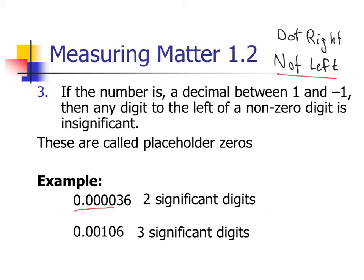In the next example, those zeros are to the left of the one — so they don't count. But what about the zero in the middle, between the one and the six? Yes, it counts — it's the sandwich zero. We've got one as a cookie, six as a cookie, and that zero in the middle is the frosting. It still means something. That's why we get three significant digits.